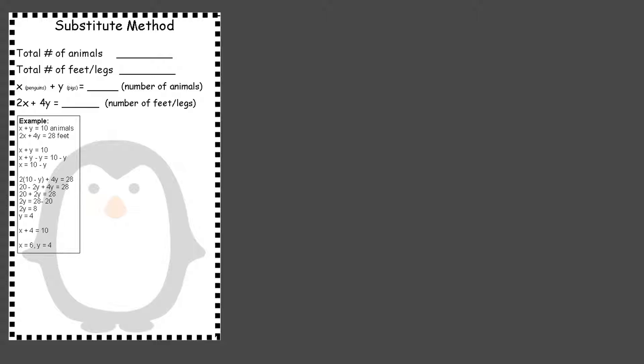The other method is the substitution method. So to do the substitution method, we are going to do the same thing. We have our dice. We rolled them. We have six penguins and three pigs. Now remember to hide that so nobody sees it. We're going to plug in. We have a total of nine animals because six plus three is nine.